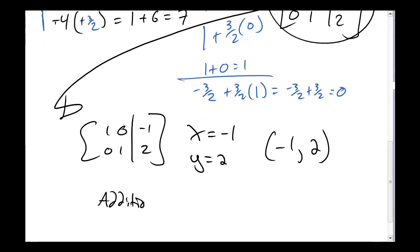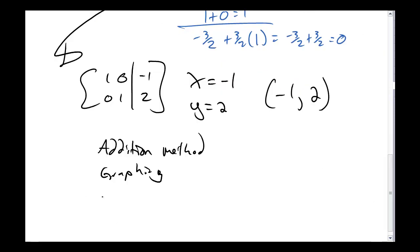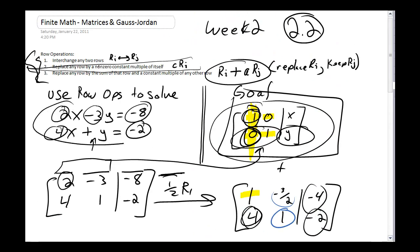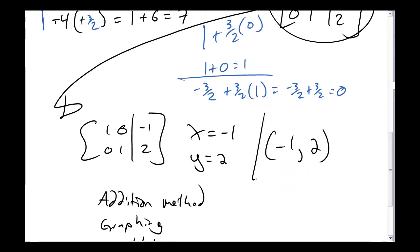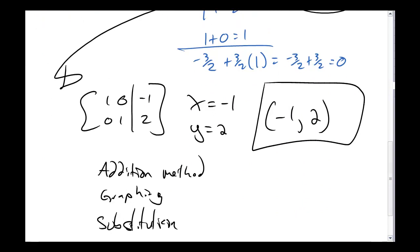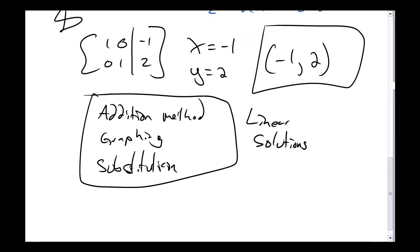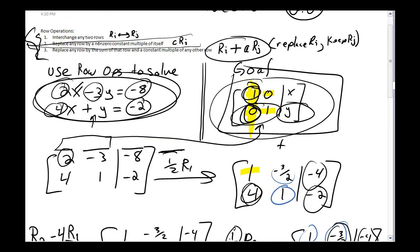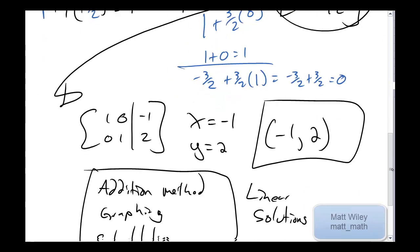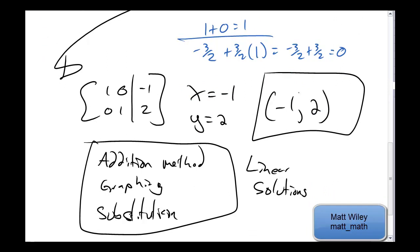If we'd use the addition method, or if we'd use the graphing method, or even if we'd use the substitution method on this original set of equations here, we would have gotten this answer all the same. Gauss-Jordan elimination is a way to use matrices to get this solution. And at the moment, it might not seem like it's any faster than any of the other methods we have for solving linear equations, but it's going to be faster when we handle something more complicated, when we handle something that's bigger than just x's and y's. We have x, y's, and z's, or a whole bunch of things. This is going to make us have a lot faster thing. So here's our answer, minus 1, 2.